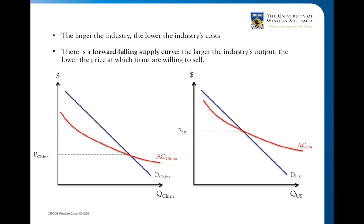The key feature of these economies of scale is the forever downward-sloping average cost curve: the larger the industry, the lower the industry's cost. As you move down the demand curve and production increases to meet demand, costs fall. This is what we call the forward-falling, or forward-sloping, supply curve — the larger the industry's output, the lower the price at which firms are willing to sell.